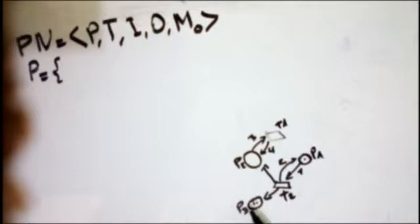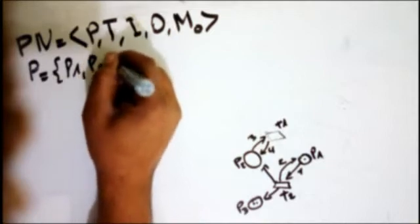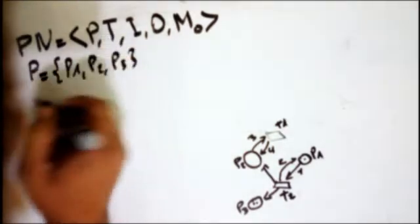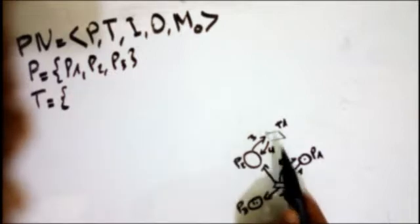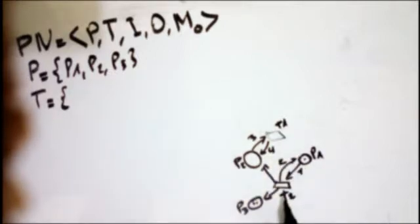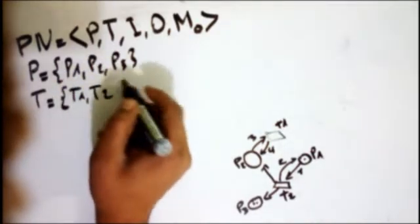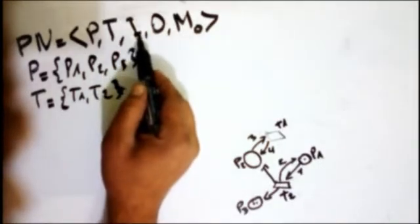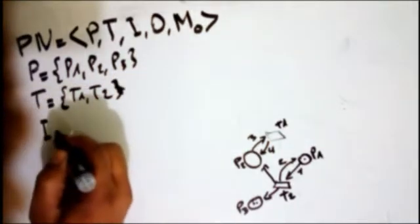I have P1, P2, and P3 — three places. For the transitions, T is the set of transitions. Here I have just two transitions: T1 and T2. For I, here I is the input matrix.